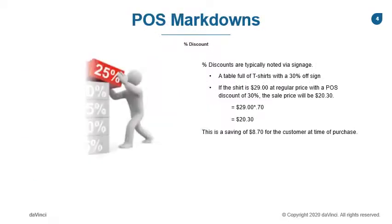One type of a temporary markdown is a percent discount. The percent discount is a POS markdown because the discount is taken at the time the sale is completed. The promotion is noted via signage. The consumer will see the items still tagged at the regular price, and the cashier will discount the merchandise accordingly as they complete the sales transaction. The idea of a percent discount is to bring more customers into your store and purchase more items.